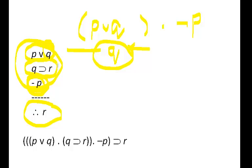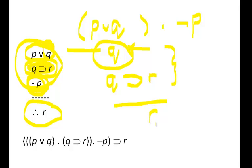The second premise is if Q then R. So we have Q, and we know that if Q then R. By the rule known as modus ponens, if we have Q and if Q then R as premises, we can conclude that R follows. We've started to introduce some rules of inference at this point, but we'll be talking a lot more about that later on.